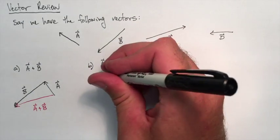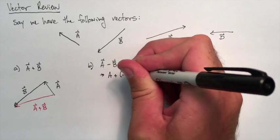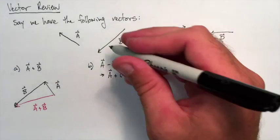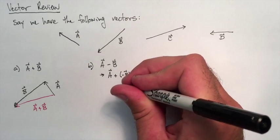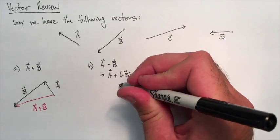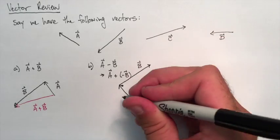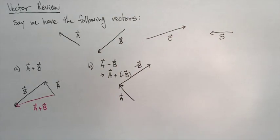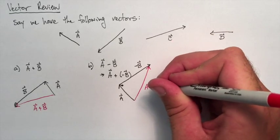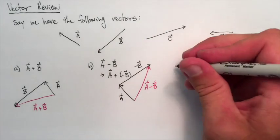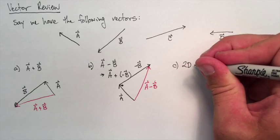Second one, A minus B. We can actually rewrite that as A plus negative B. So that way we turn it into an addition. So there's our A. And now we're going to put negative B. So you can see that B there is pointing in the opposite direction as the B listed at the top. Now we can add them. A plus negative B. There's the result.